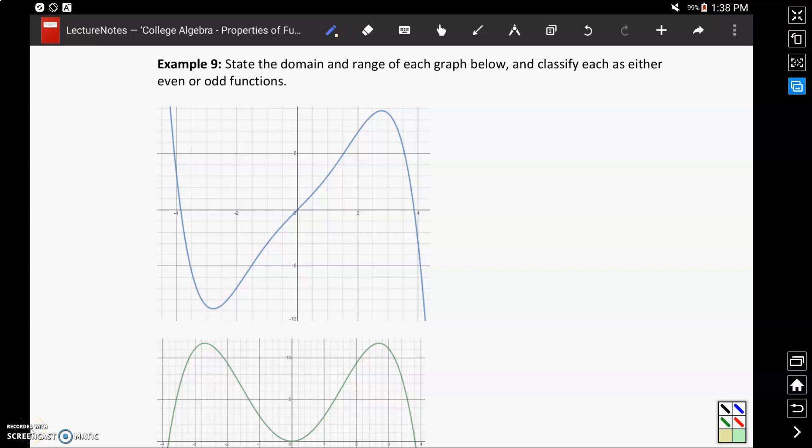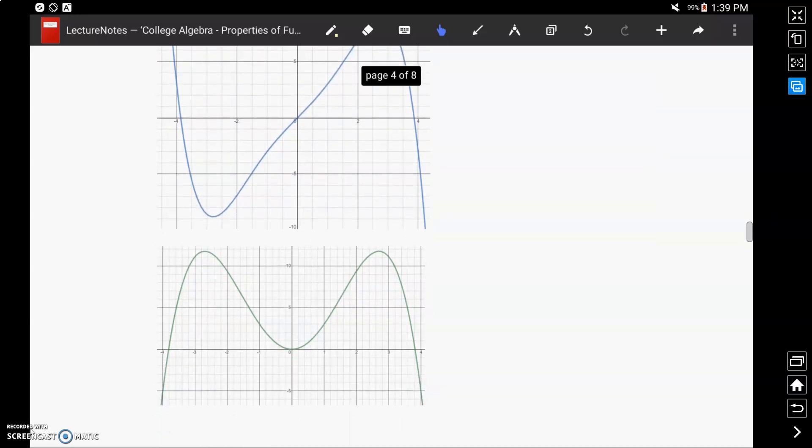Example 9 asks us to take a look at the two graphs below and classify them as either even or odd functions. A given function could be even or odd, or could be neither of those two things. So we have three different ways, at least related to even and oddness, to classify a function.